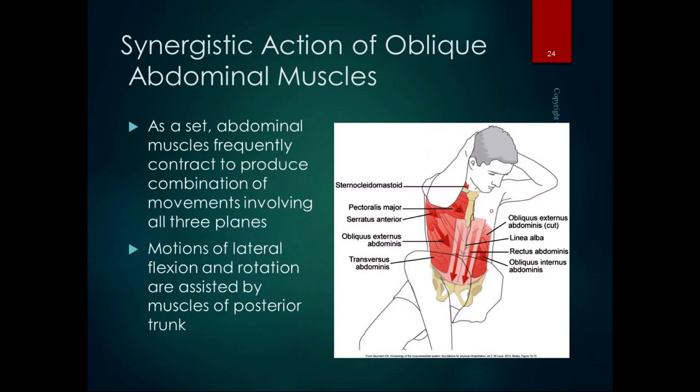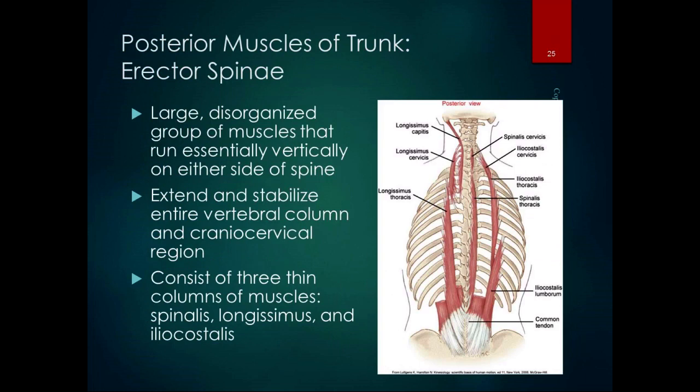The curl phase is driven by the abdominal muscles; the rest of the sit-up is the hip flexors. When doing an oblique crunch, the external obliques and internal obliques act synergistically. The abdominal muscles frequently contract to produce a combination of movement in all three planes — some flexion, some rotation, and some lateral flexion — assisted by the posterior trunk muscles. In the lab activity, try to figure out which side of the internal obliques and which side of the external obliques are contracting — they're different.